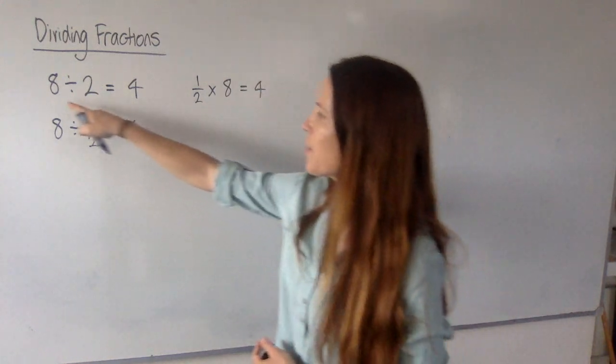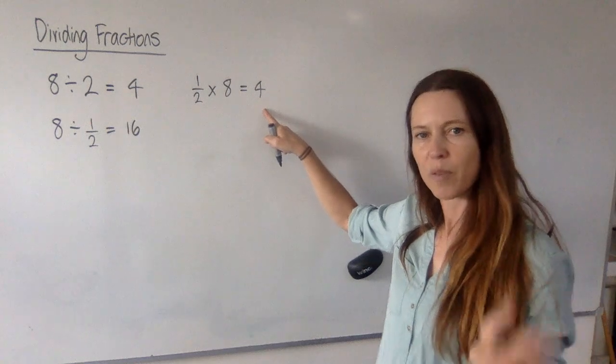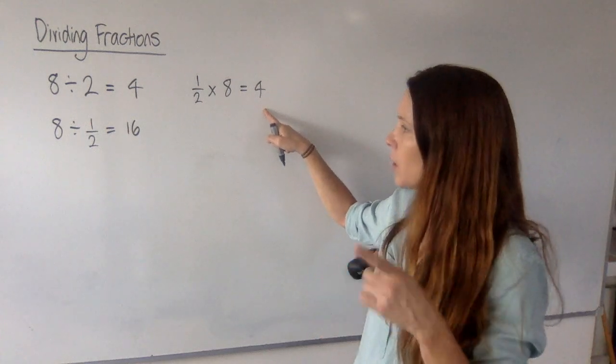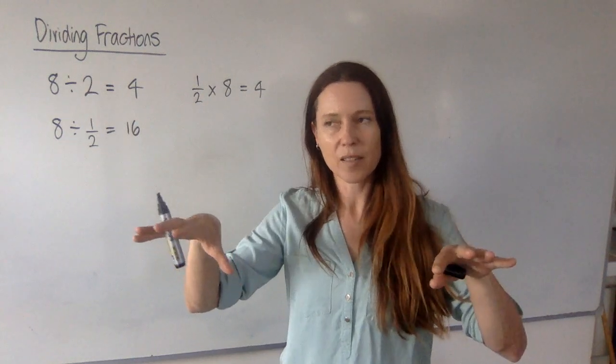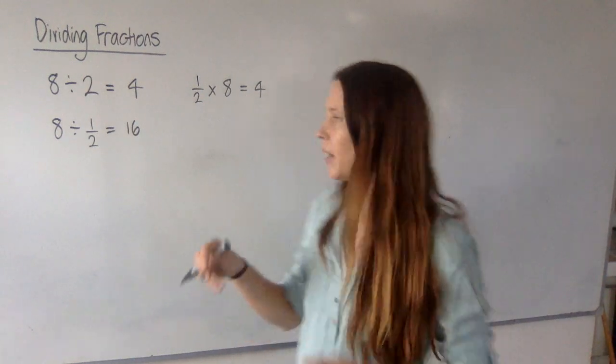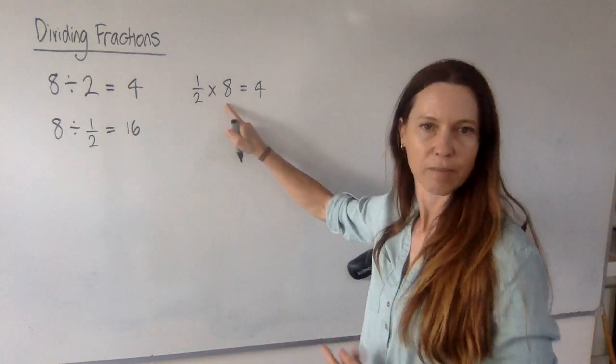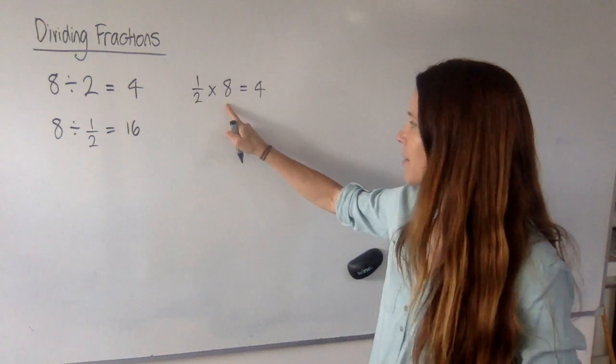Can you see how this question and this question are just asking the same thing, but around a different way? If we're taking 8 and we're dividing it into 2 equal parts, we're halving it, aren't we? And we're finding half of it, half of the 8.